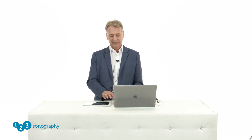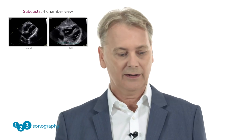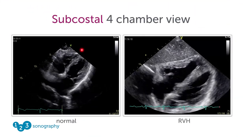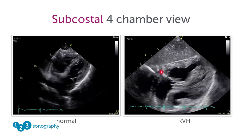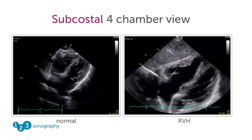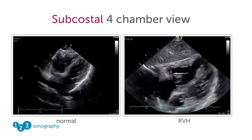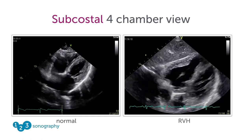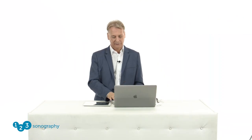Let's turn to the subcostal view — this is the preferred view to look at the thickness of the right ventricle wall. Let us compare a normal individual with normal right ventricle thickness and a patient with significant right ventricle hypertrophy. Be aware that measurements are sometimes very difficult because the right ventricle is strongly trabeculated. So don't measure into the trabeculae, but really look at the compacted part of the right ventricle.